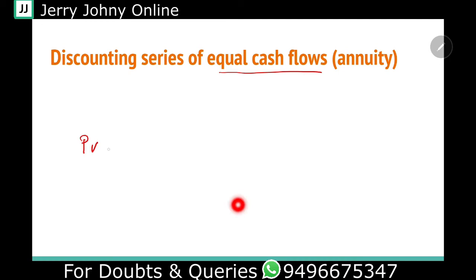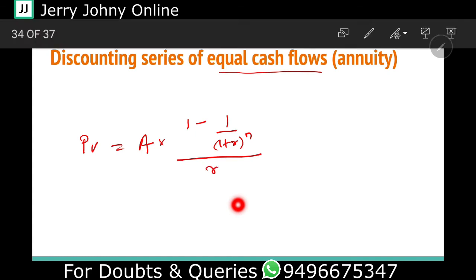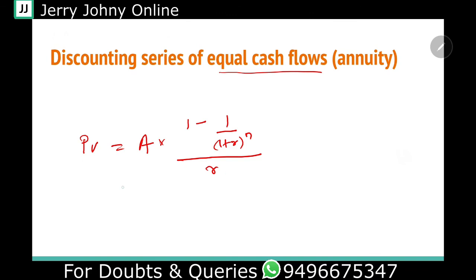So, the present value is equal to the annuity amount multiplied by 1 minus 1 by (1 plus r) raised to n, whole divided by r. This is a very simple formula.